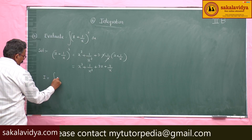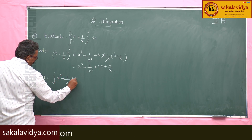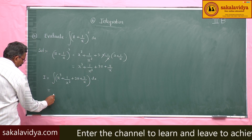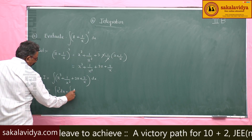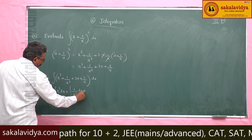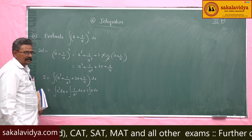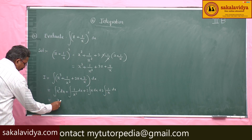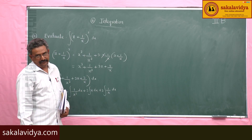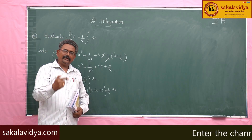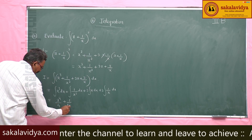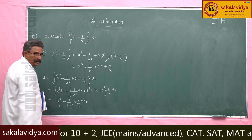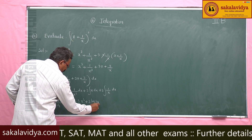So integral I = ∫(x³ + x⁻³ + 3x + 3/x) dx = x⁴/4 + x⁻²/(-2) + (3/2)x² + 3 log|x| + C, which simplifies to x⁴/4 - 1/(2x²) + (3/2)x² + 3 log|x| + C.